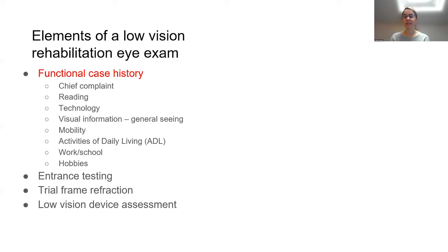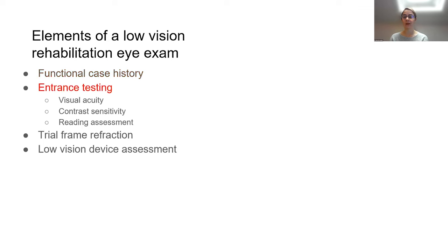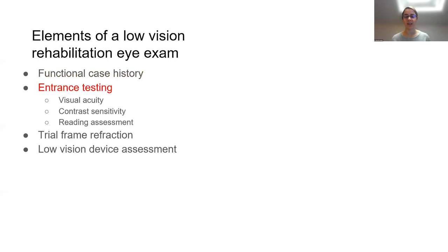We take a really detailed and comprehensive functional low vision history during a low vision exam, which is different from a usual eye exam history. After completing the full history, we do entrance testing. Some entrance tests are the same as usual — extraocular motilities, pupils, and confrontation visual fields — but there are some tests that are different.